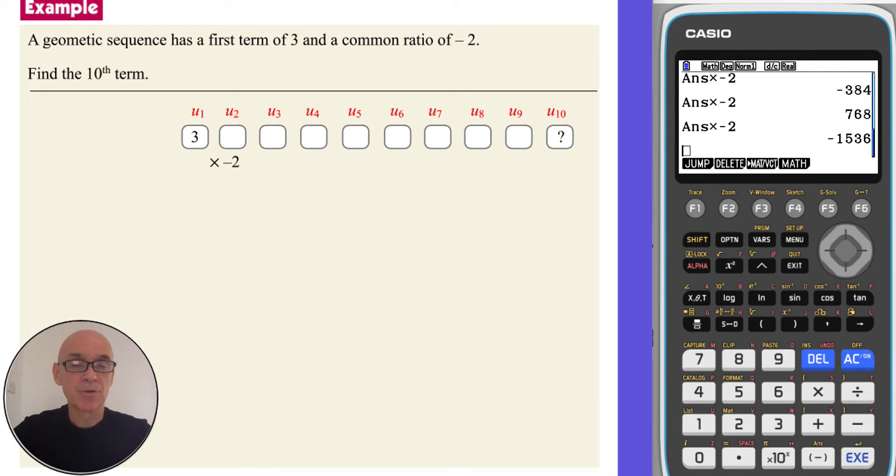So another approach to this question is to use the formula which is given in your formula booklet. If we start by stating the first term u1 and the common ratio r and then substitute these numbers into the formula, we're simply replacing u1 with 3 and r with negative 2.